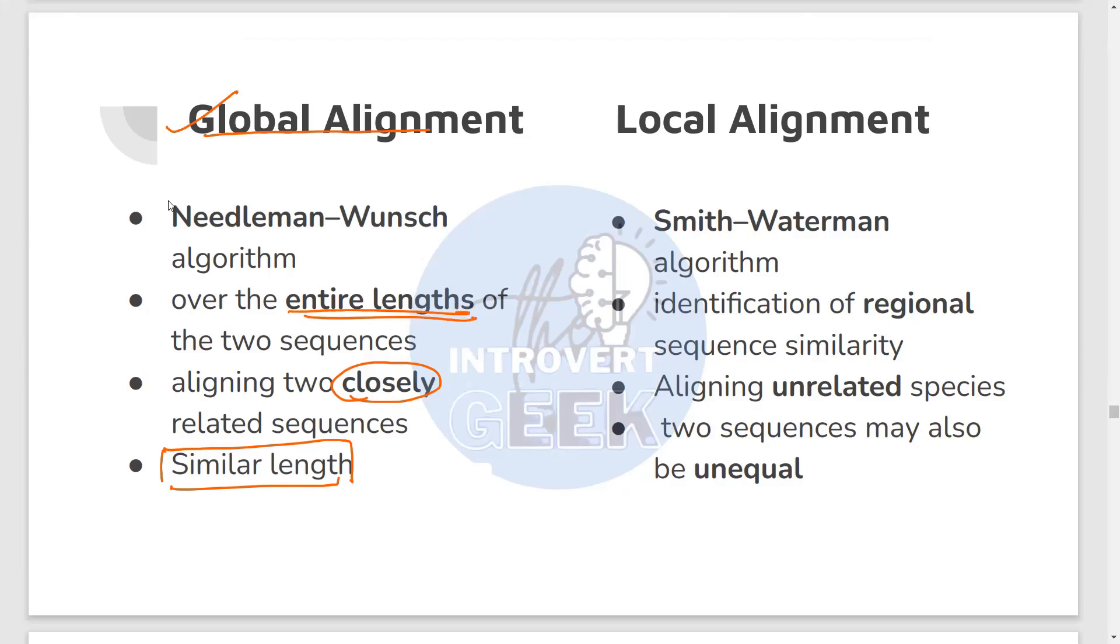This is a very helpful distinction between the two. When do you go for global alignment? When you have sequences of similar length and when they are closely related. See, if you have two sequences from Homo sapiens, say one is from you and one is from your friend, if you want to align these two sequences, you should go for global alignment. Why? Because both would be of similar length and both are from the same species, so you will have more similarity. Therefore, it makes sense to do the alignment over the entire length, right?